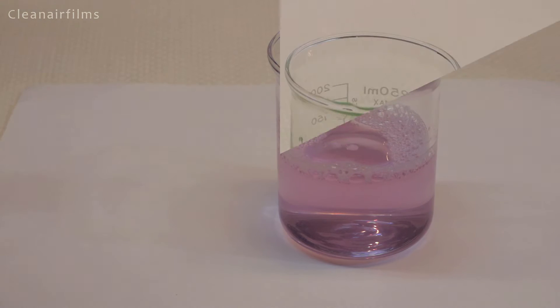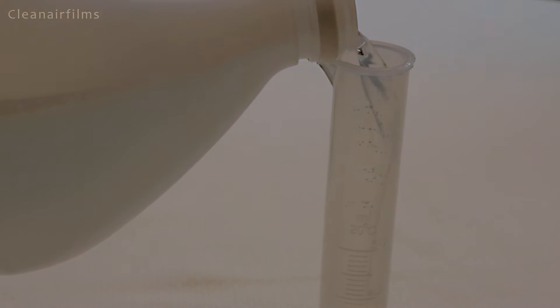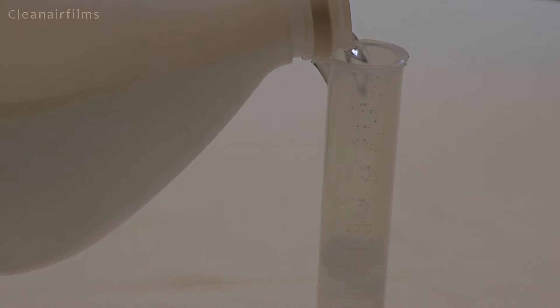Now let's do the official titration. Start by making another beaker of the ammonia solution. Then put 50 milliliters of vinegar in the graduated cylinder. Now add about 10 milliliters of vinegar to the beaker.